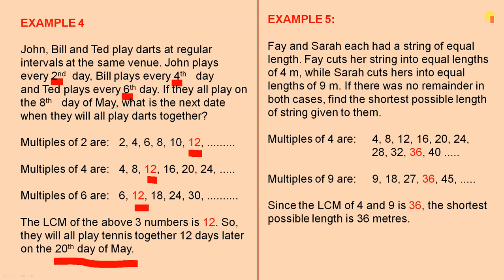Here's another real world example, example five. Faye and Sarah each had a string of equal length. Faye cuts her string into equal lengths of four metres, while Sarah cuts hers into equal lengths of nine metres. If there was no remainder in both cases, find the shortest possible length of string given to them.